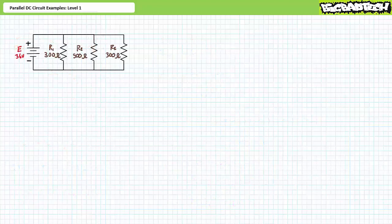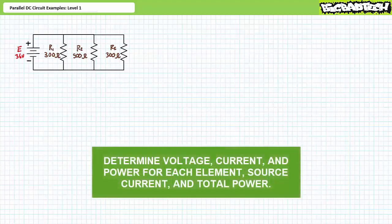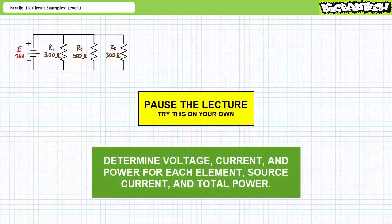Our next illustrated example features a 36-volt source in parallel with R1 (300 ohms), R2 (500 ohms), and R3 (also 300 ohms). We're again asked to solve for voltage drop, current, and power for each element, the source current, and the total power. Pause the lecture and try this on your own. If you're tracking, you should have obtained the following results.